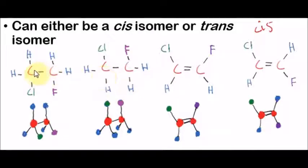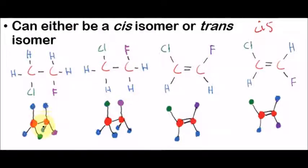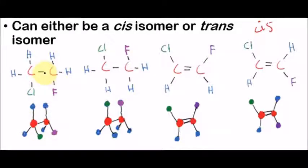That's because these two carbon atoms right here are single bonded to each other. Whenever carbon atoms are single bonded to each other, it allows for free rotation. The colors here represent: carbon atoms, blue dots are the hydrogen atoms, the green dot is the chlorine atom, and the purple dot is the chlorine atom. Whenever you have single bonds, it allows for free rotation.